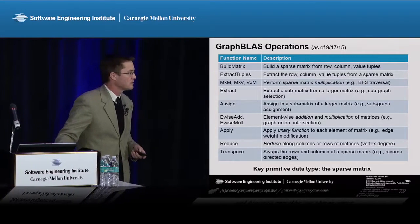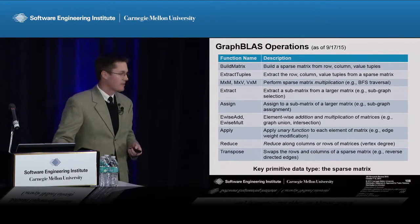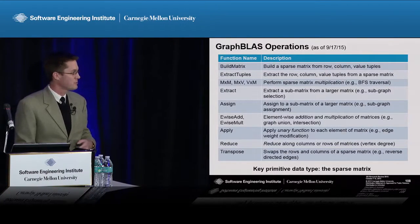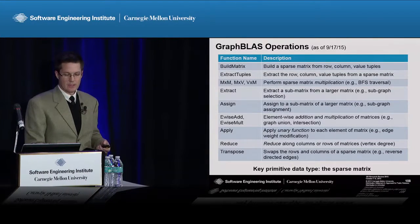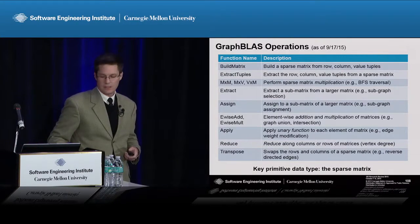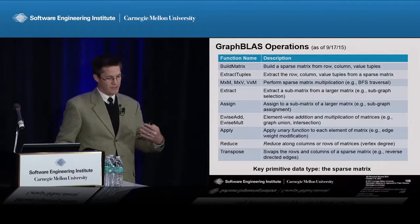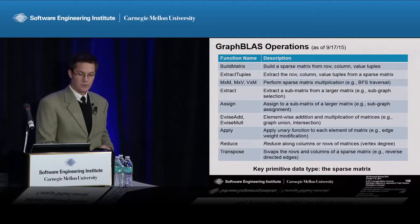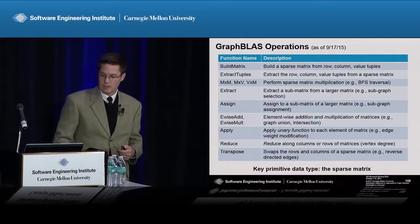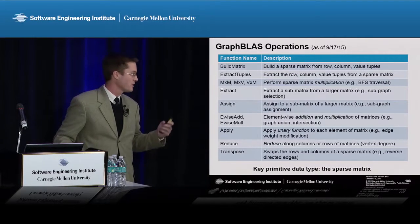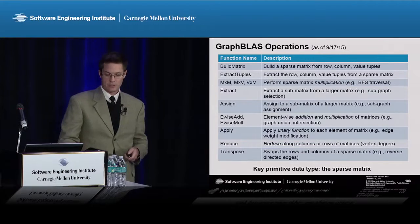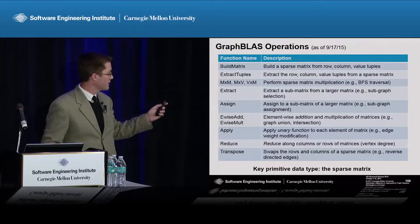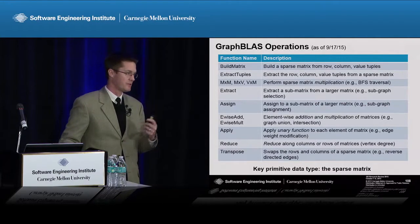As of mid-September, the committee has decided on nine primitive operations. Build matrix and extract tuples are the ways to get data into and out of the library. The workhorse is the matrix multiply, which is equivalent to a single-ply traversal through the graph. We have extract and assign operations for subgraphs, element-wise operations to modify edges and vertices, arbitrary apply and reduction operations, and the transpose — which changes the direction of every edge in the graph. The key primitive data type is the sparse matrix, i.e., the adjacency matrix.